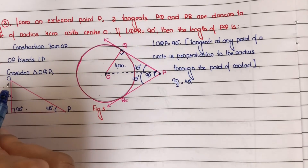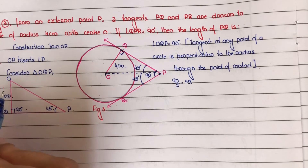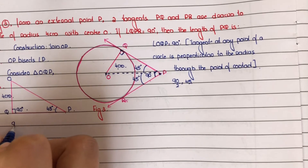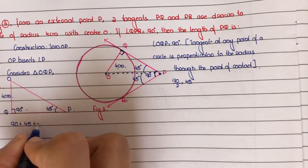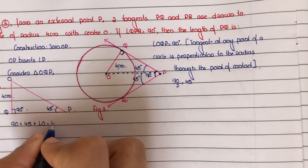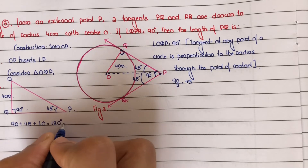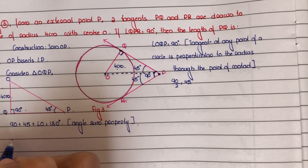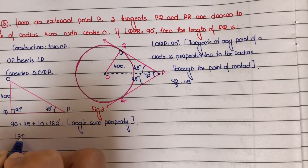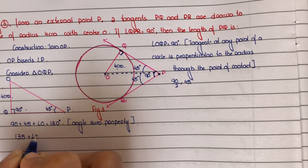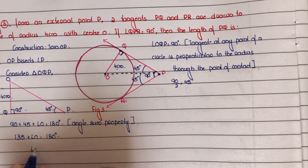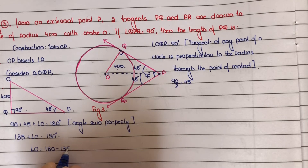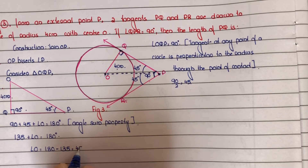Next, find angle O using the angle sum property: 90 degrees plus 45 degrees plus angle O equals 180 degrees. So 135 plus angle O equals 180 degrees, therefore angle O equals 180 minus 135, which equals 45 degrees.